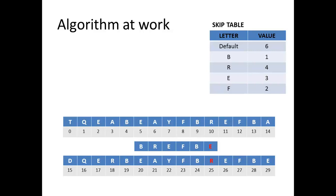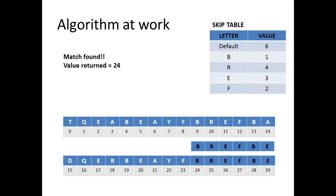Start comparing again. E and R give a mismatch. We move by 4, that is the skip value of R. And start comparing again. E with E, B with B, F with F, E with E, R with R, B with B, until we find a match. The value of return here is 24.